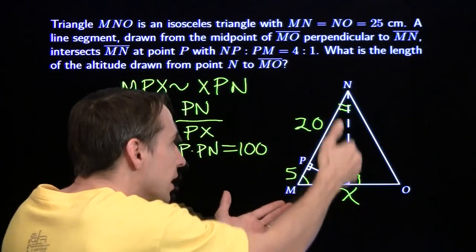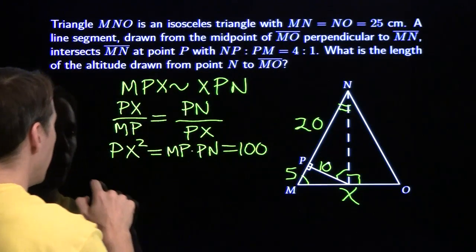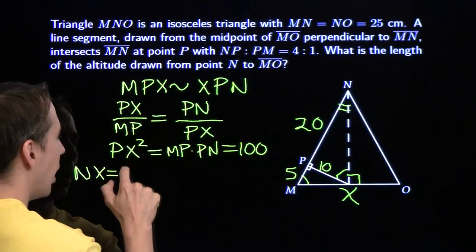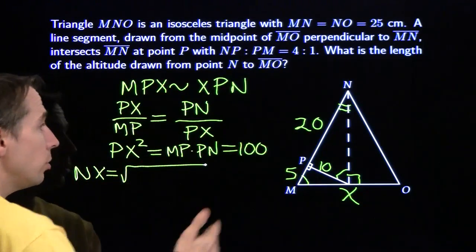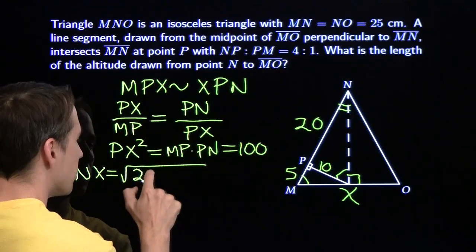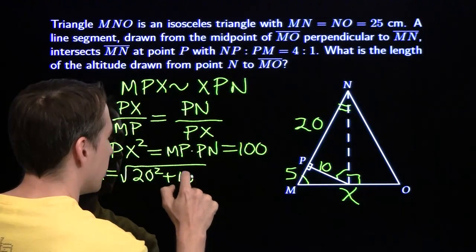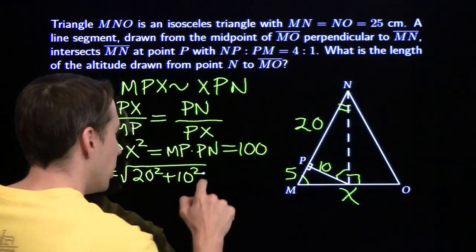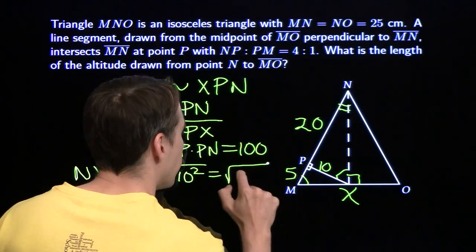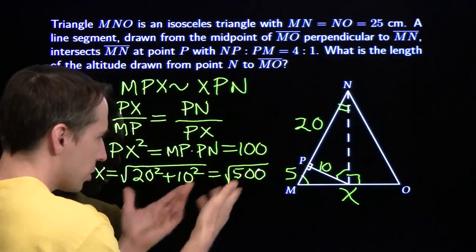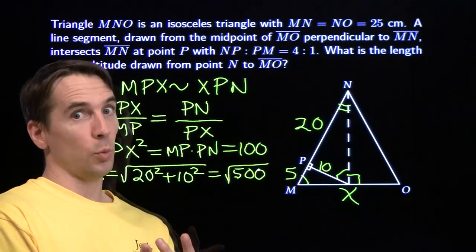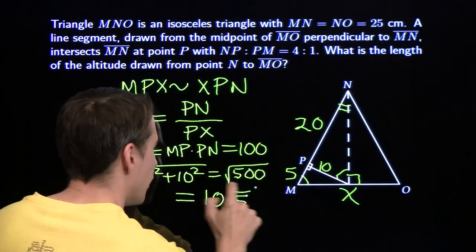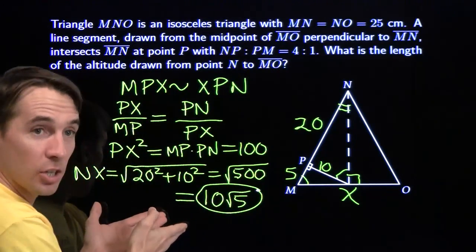Now we can use the Pythagorean theorem on this triangle — we've got both legs, so we can find the hypotenuse. The hypotenuse is the square root of the sum of the squares of the legs. 20 squared is 400, 10 squared is 100, and 400 plus 100 is 500. So we have the square root of 500, which is the square root of 5 times 100, giving us 10 times the square root of 5. We're finished with this problem.